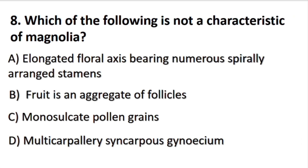Which of the following is not a characteristic of Magnolia plant? The answer is D part: Multicarpellary syncarpous gynoecium. Magnolia plants have a multicarpellary apocarpous condition.